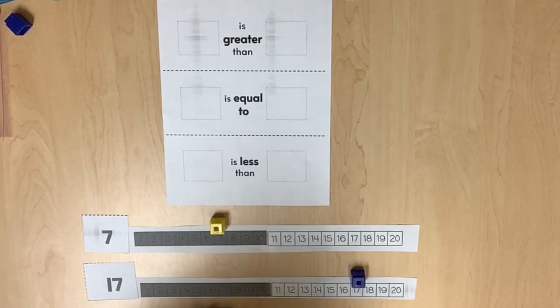7 is less than 17 because fewer spaces were counted, or 7 is less than 17. 17 is greater than 7 because more spaces were counted. Students may also recognize that 17 is located by counting 10 and then another 7 spaces.